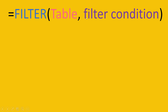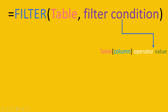Before we move further, let's understand the filter condition and what components it comprises. The filter condition is made up of these components: first you provide the table along with the column name — the table name is already given, and the column name will be provided together with the table. It gives you automatic suggestions, you just need to select them. Then you provide the operator, for example equals to, greater than, less than, etc.